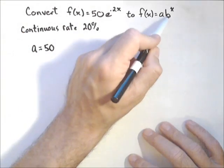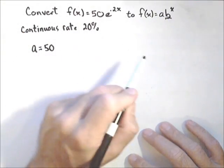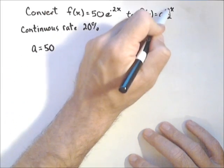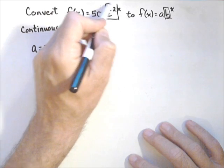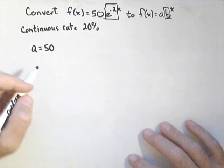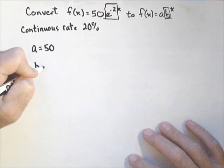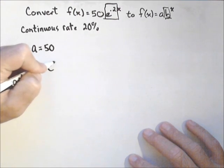Now the next important thing is to get the base. The base is whatever's being raised to the variable. So over here, it's B. Here, it's not just E. It's actually E to the 0.2. So B equals E to the 0.2.